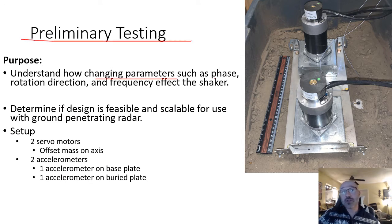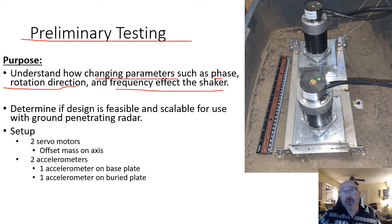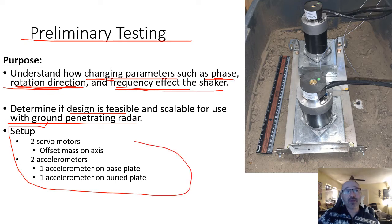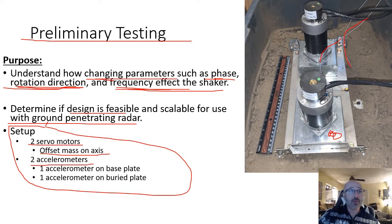In our preliminary testing, the purpose was to understand how changing parameters — such as phase, rotation direction, and frequency of the shakers — would change our desired effect. With these high-end servos, all of these are things we can control. We wanted to determine what frequency we would see the landmine vibrating at based upon the phase, input rotation direction, and frequency of the shaker. From that, we'd determine design feasibility: is it scalable? Can we use it with ground penetrating radar?